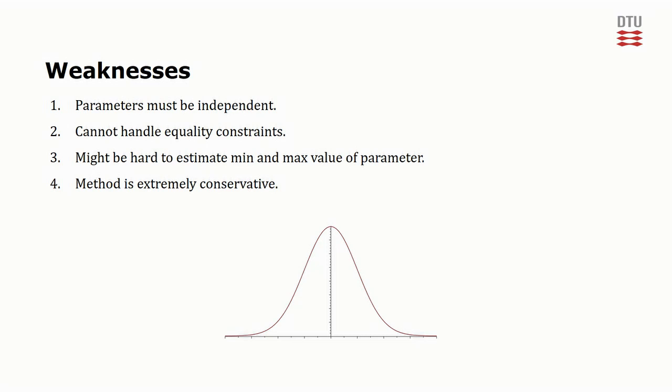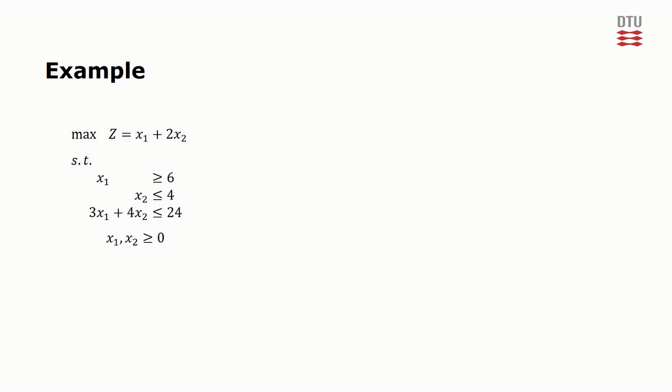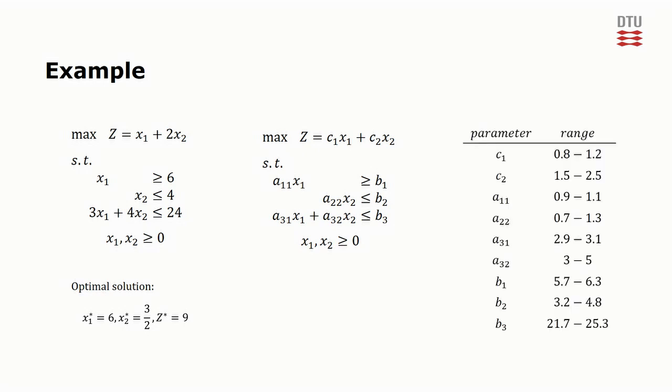We conclude this video by looking at an example. On the left, we have a simple linear program which has this optimal solution. Let's now say that we are in fact unsure about the parameters in the program. In the middle here, you see an algebraic representation of the program. And here on the right, the ranges of the parameters are given. Since the objective is to maximize c1x1 plus c2x2, we should choose c1 and c2 as small as possible to be conservative.